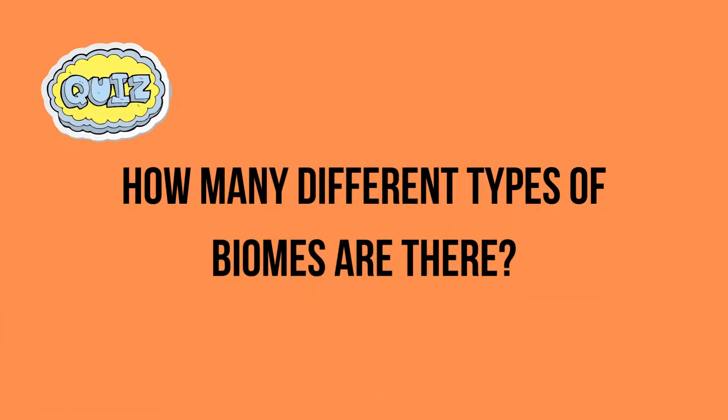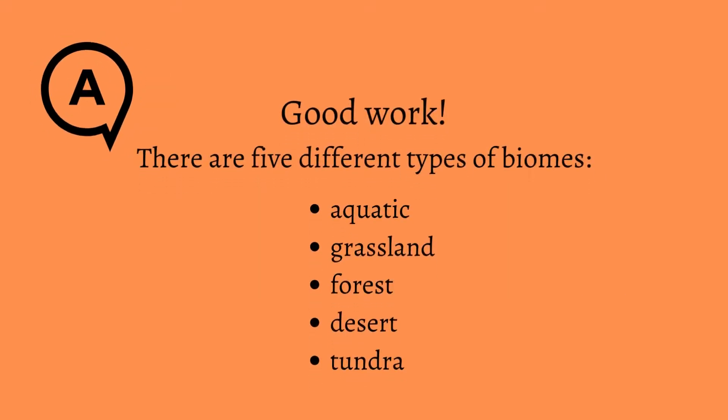Question 2: How many different types of biome are there? There are 5 different types of biomes: aquatic, grassland, forest, desert, and tundra.